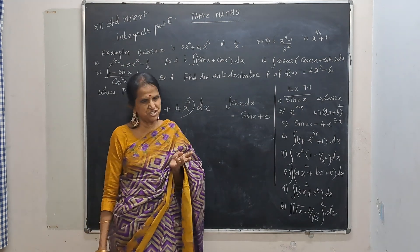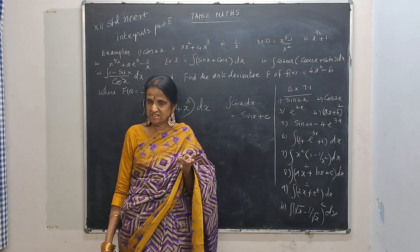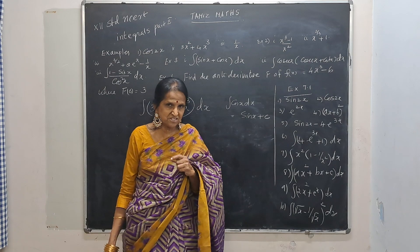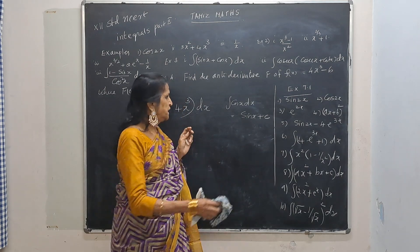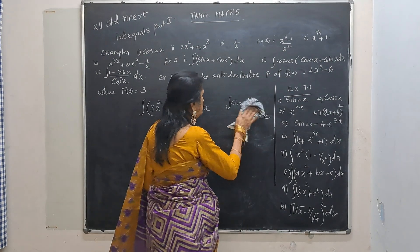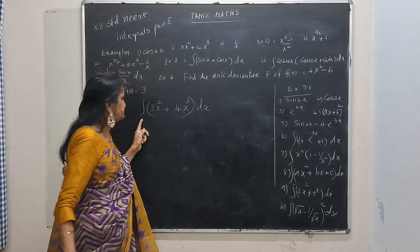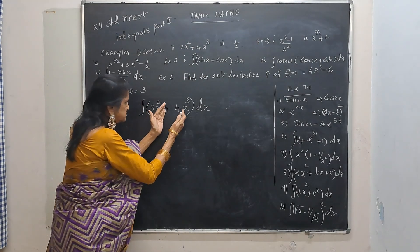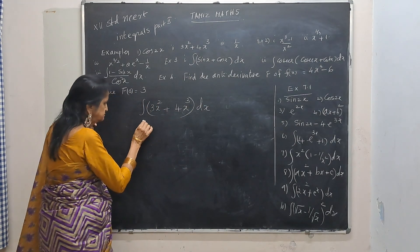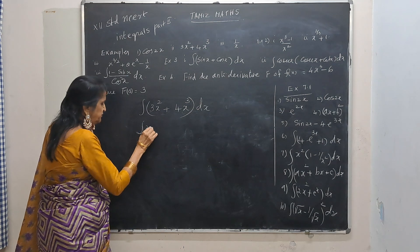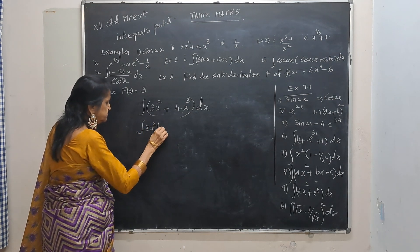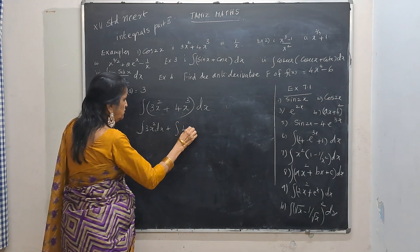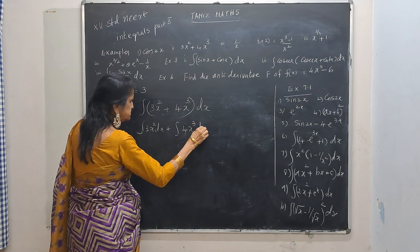Now we go for the question 3x squared plus 4x cubed. Since it is all addition, it could be split: integral of 3x squared dx plus integral of 4x cubed dx.